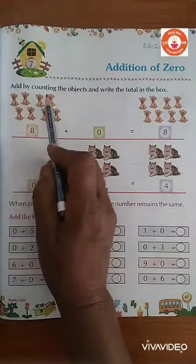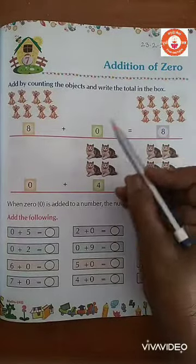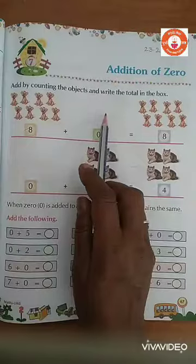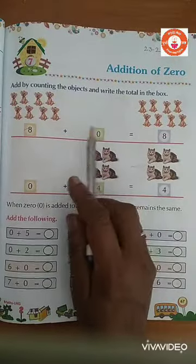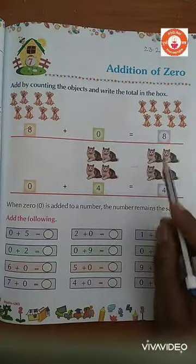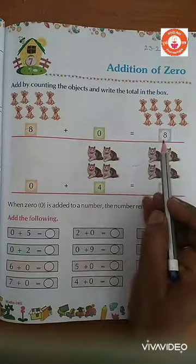Add by counting the objects and write the total in the box. See children, we have to add the numbers. Add the objects from two groups and write the numbers. So, 8 plus 0, 8.